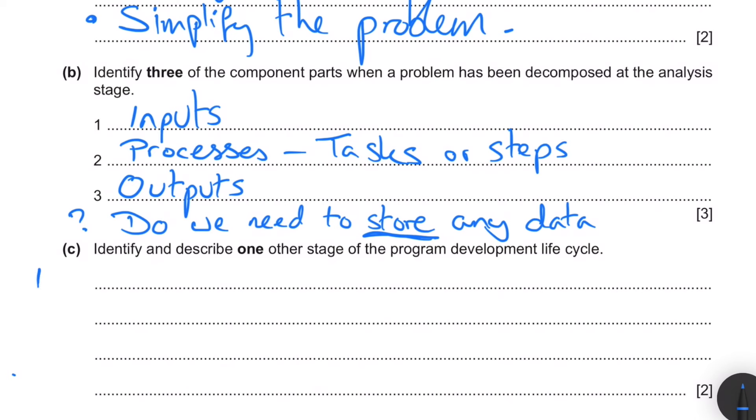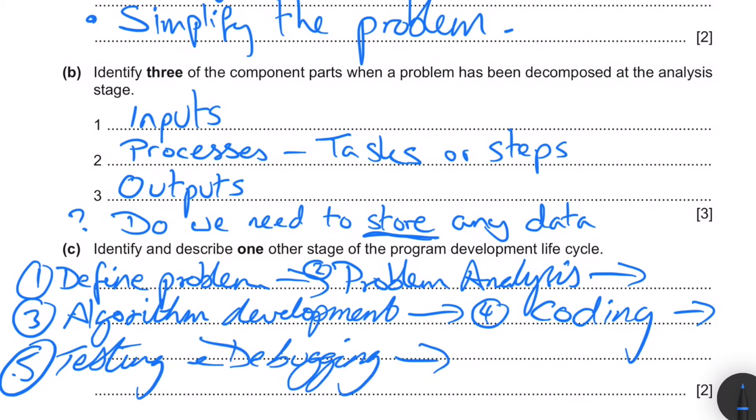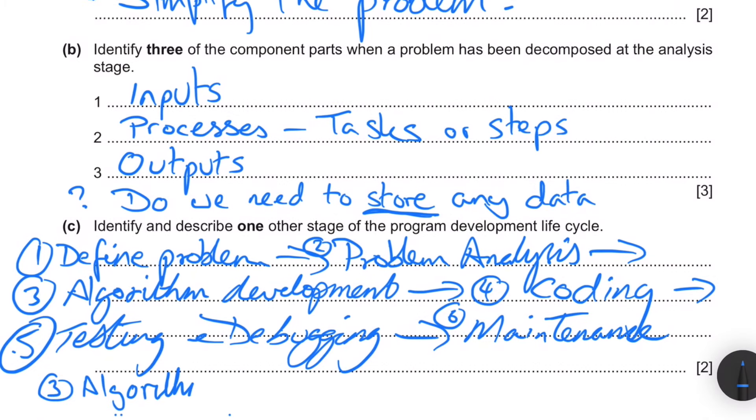Identify and describe one other stage of the programming development lifecycle. I'm going to draw it out for you. We've got number one: define problem. Then we move on to number two: analysis. Number three: algorithm development. Number four: coding. Number five: testing and debugging. And finally number six: maintenance, once the program has been launched. You can pick any of those. So if we were to say algorithm development, designing new solution, and that would be it.